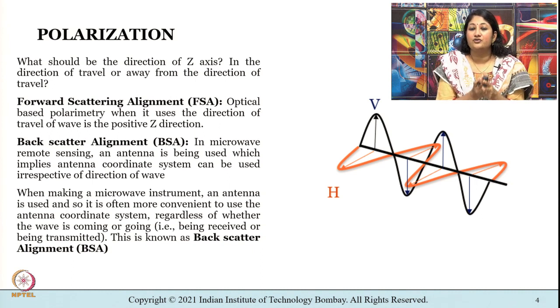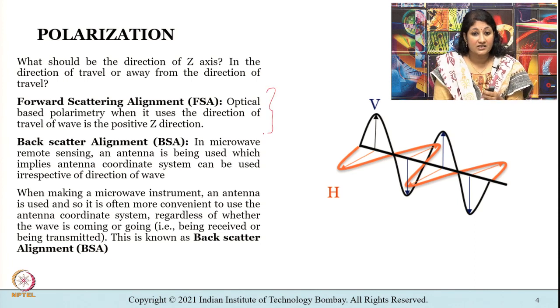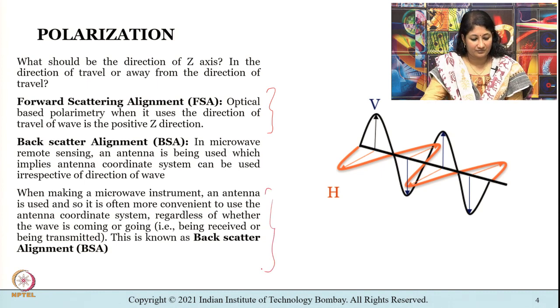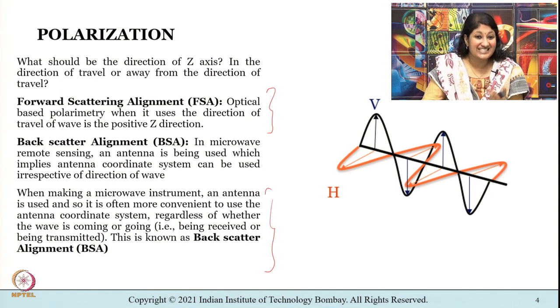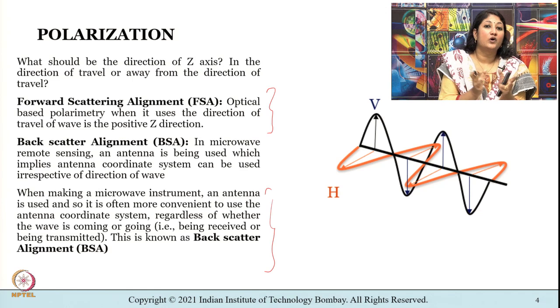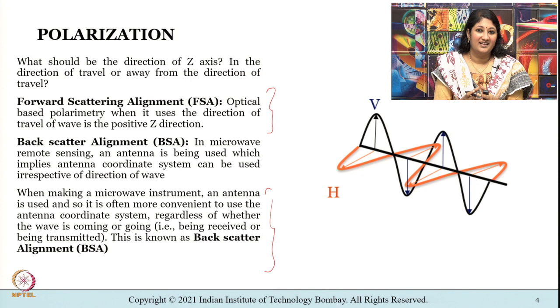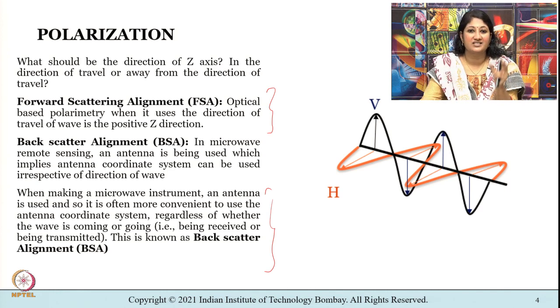Let me take this background to introduce to you something known as forward scattering alignment and back scatter alignment. Optical based polarimetry when it uses the direction of travel of wave in the positive z direction we call it as forward scattering alignment. Let me reiterate when the direction of travel of wave is the positive z direction we call it as forward scattering alignment abbreviated as FSA.